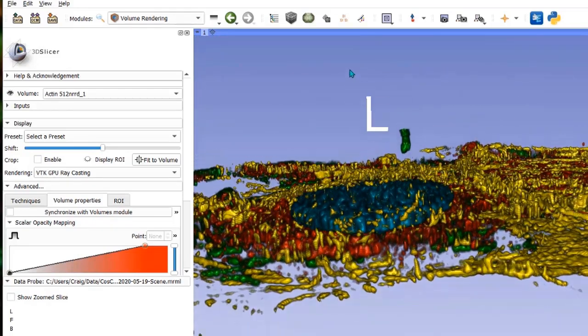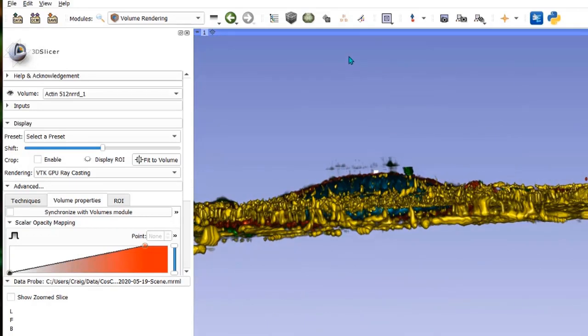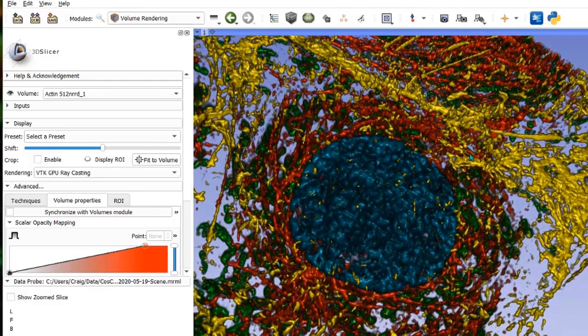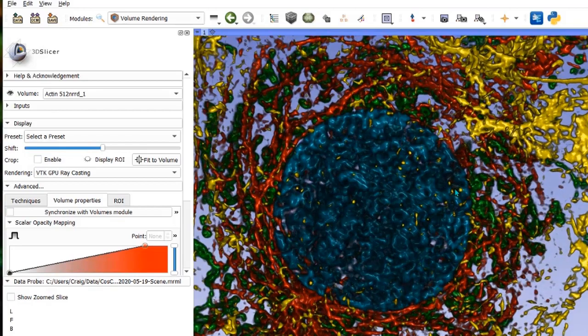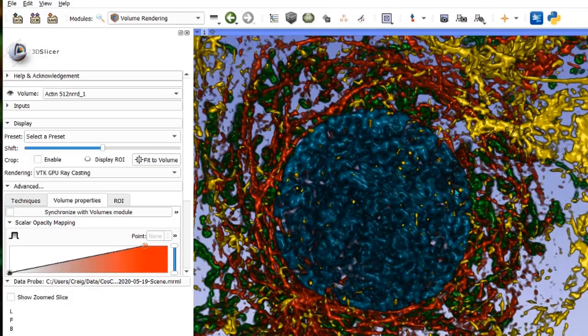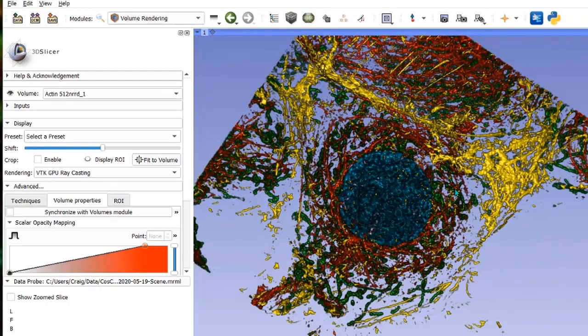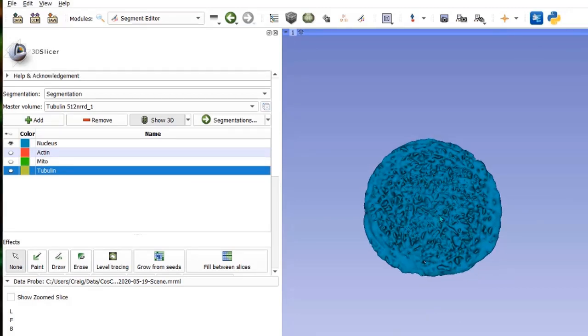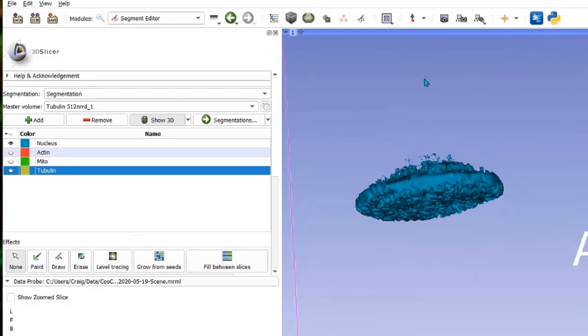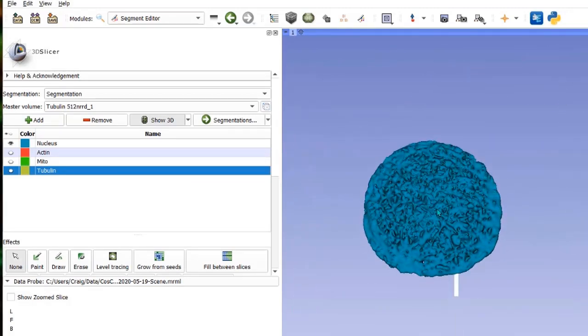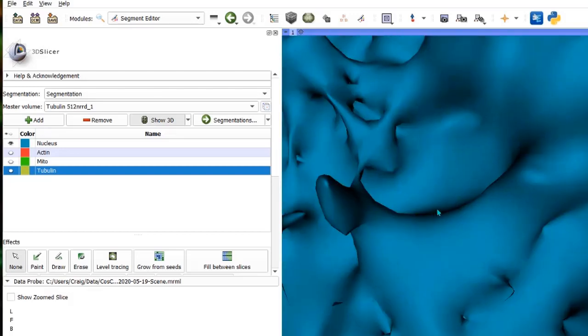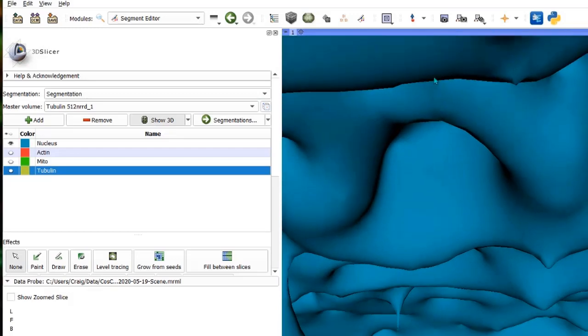However, to get the data into a format that can be used by animation and VR applications, we need to threshold and segment the data. 3D Slicer offers a variety of methods for data segmentation. Here's the segmented cell nucleus. It's basically just an iso surface or a wireframe mesh that's been given a surface color. We can fly inside and see that it's a hollow object.